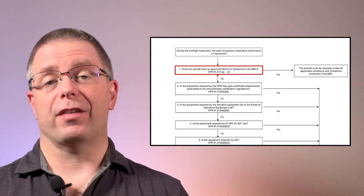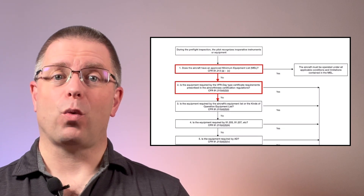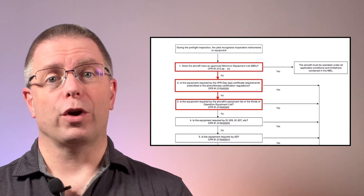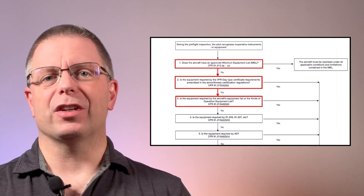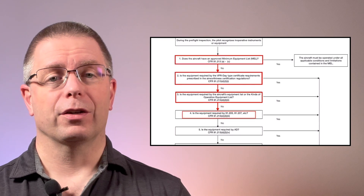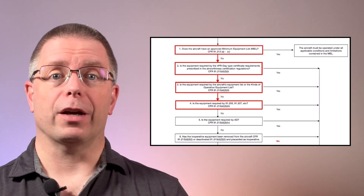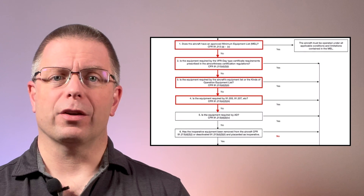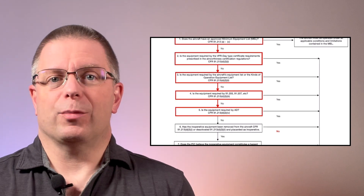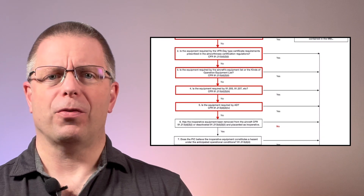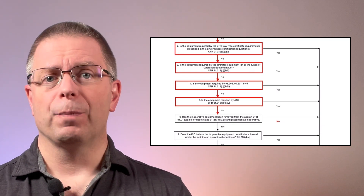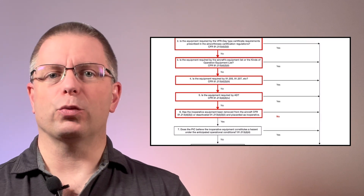For the third example, we've planned a night cross country in a Piper Warrior. However, during the preflight, we discover the landing light is not working. Referring to the flowchart, we know that our Piper Warrior does not have an MEL. Second, the landing light is not required by the TCDS. Third, the Warrior does not have a KOEL, and the equipment list contains the landing light but does not list it as required. Fourth, 14 CFR 91.205 requires a landing light, but only if the flight is for hire. Since we're not flying for hire, the light's not required. Fifth, after searching the ADs, we're not able to find any that require the landing light. So far, there's no indication that we cannot make the flight, so we'll make sure the light is deactivated and we'll placard the switch as inoperative.